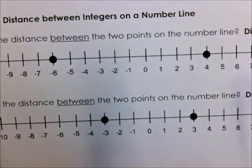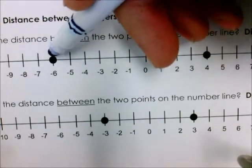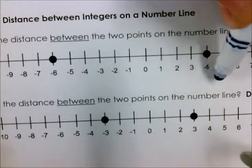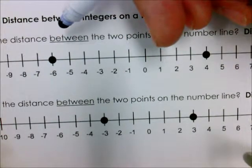So I have my two points, one point on negative 6, one point on positive 4. All I have to do is just count how many spaces it is. It doesn't really matter if I start here or if I start here. The distance is going to be a positive number.